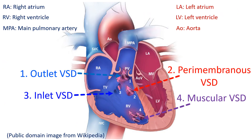Important locations of VSD are: Perimembranous, Muscular, Outlet, and Inlet. Outlet VSD is near the outlet of the ventricles, near the origin of the great arteries.